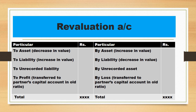On the credit side we represent all incomes. If any asset's value increases, it will be termed as income and shown on credit side. Similarly if any liability decreases, it will also be termed as income and written on credit side. When there is any unrecorded asset at the time of reconstitution, it will increase your income and so we write it on credit side. After posting income and expenses, if the balancing figure comes on debit side we write profit, and if it comes on credit side we write loss — both distributed among partners in their old ratio.